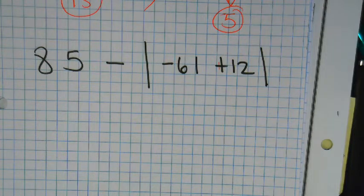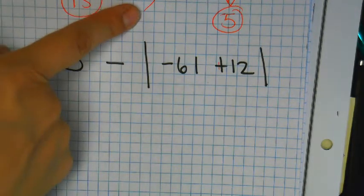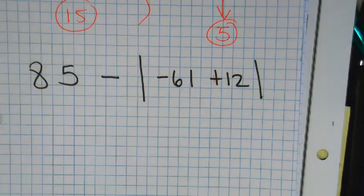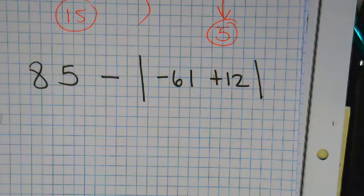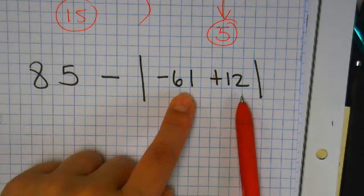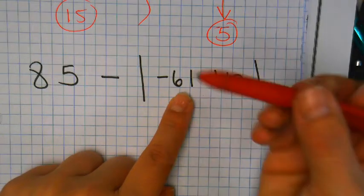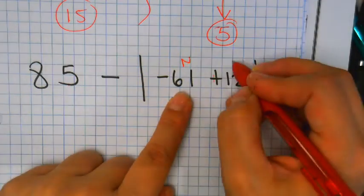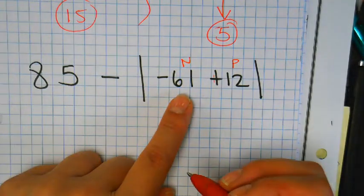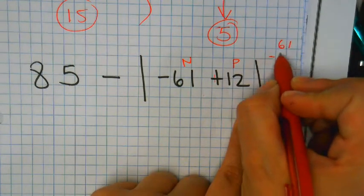Write it down first. Notice how my line ended right there, and I no longer have a squiggly line. So what do I do first? I do what's in here first. And then you go back to your old school rules from two weeks ago, and you go, okay, this is a negative, and this is a positive, so what am I going to do? Subtract, because the signs are different.